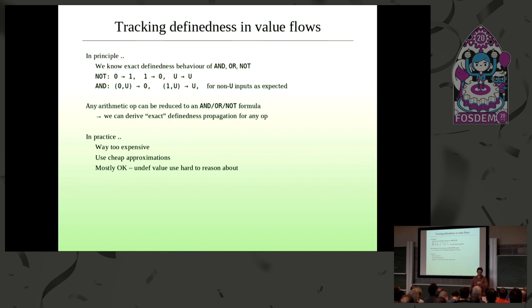But in practice, it's completely infeasible, so infeasibly expensive. So we're going to do some cheap approximations, which I'll show you in the next slide. And the reason the cheap approximations work most of the time is because I think it's actually really hard for humans to reason about arithmetic operations on a mixture of defined and undefined bits. And that includes compiler writers. Especially compiler writers over here, maybe. So that means that they don't actually happen very often or they happen only in a very limited set of scenarios.